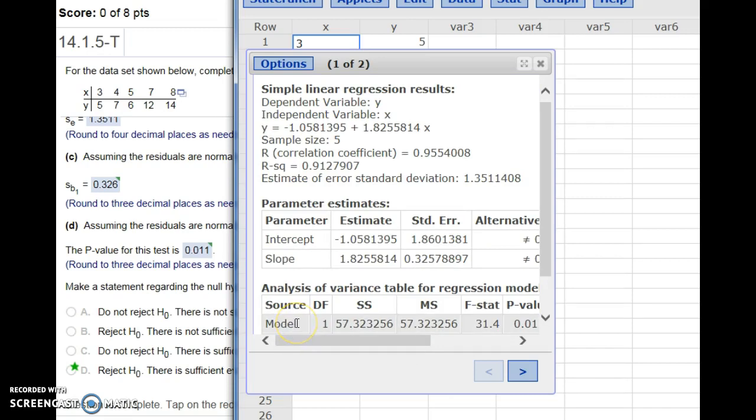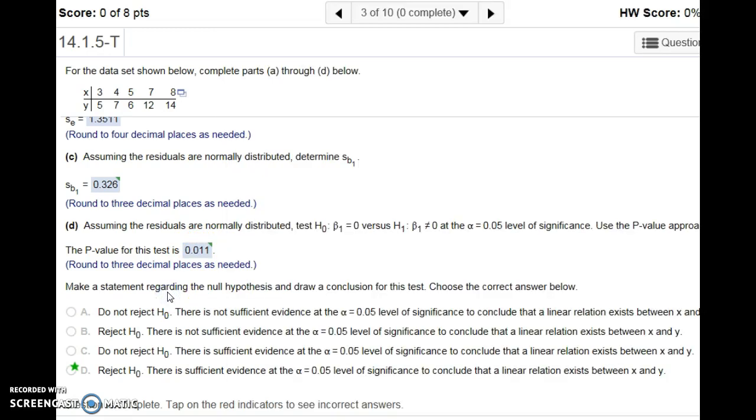That the null hypothesis is true with the data we were given. This is a very small p-value, close to one percent, which is below alpha. So we're going to reject the null hypothesis.